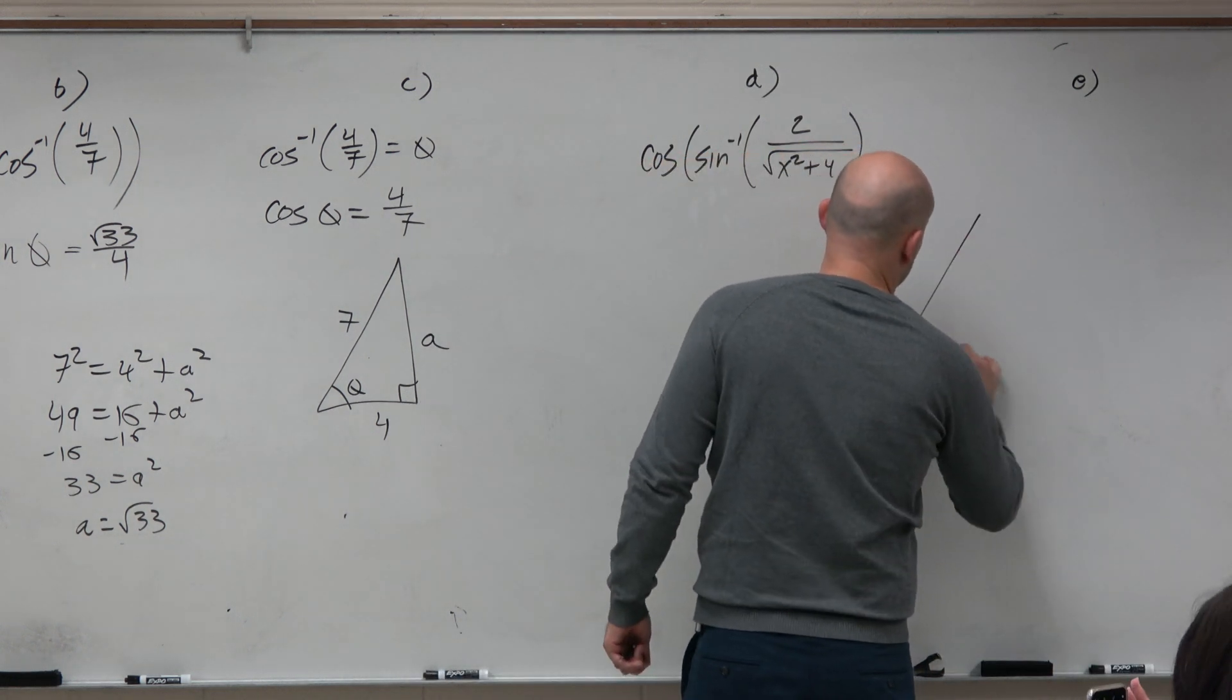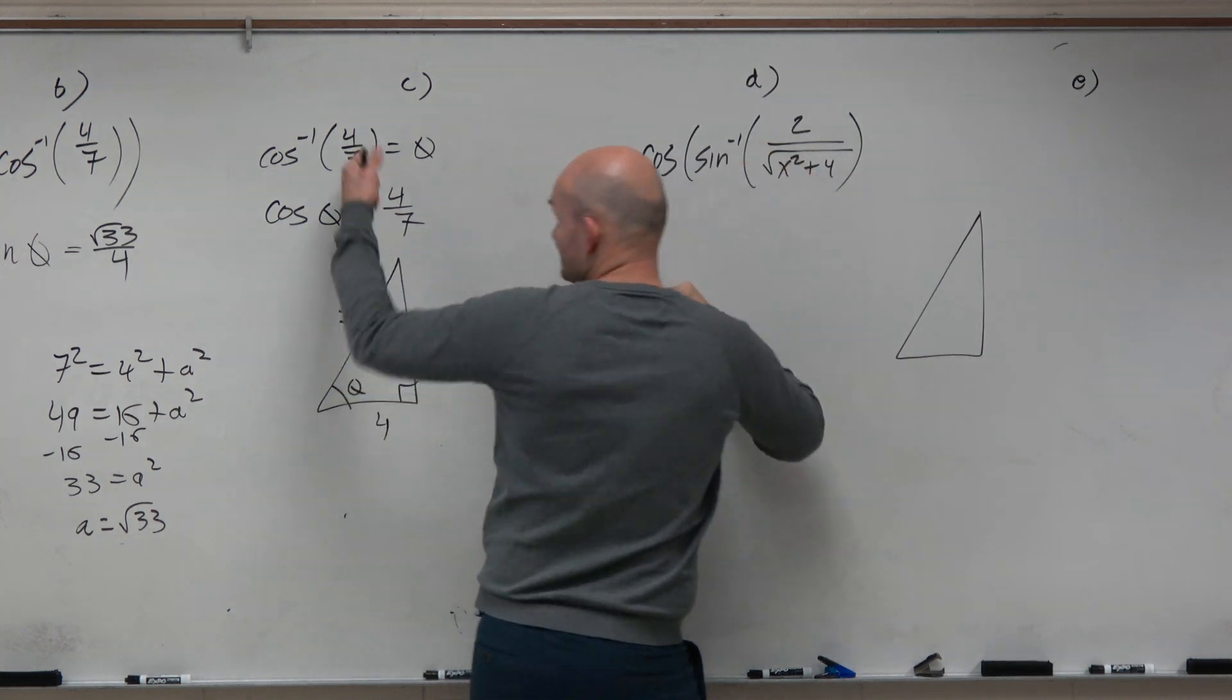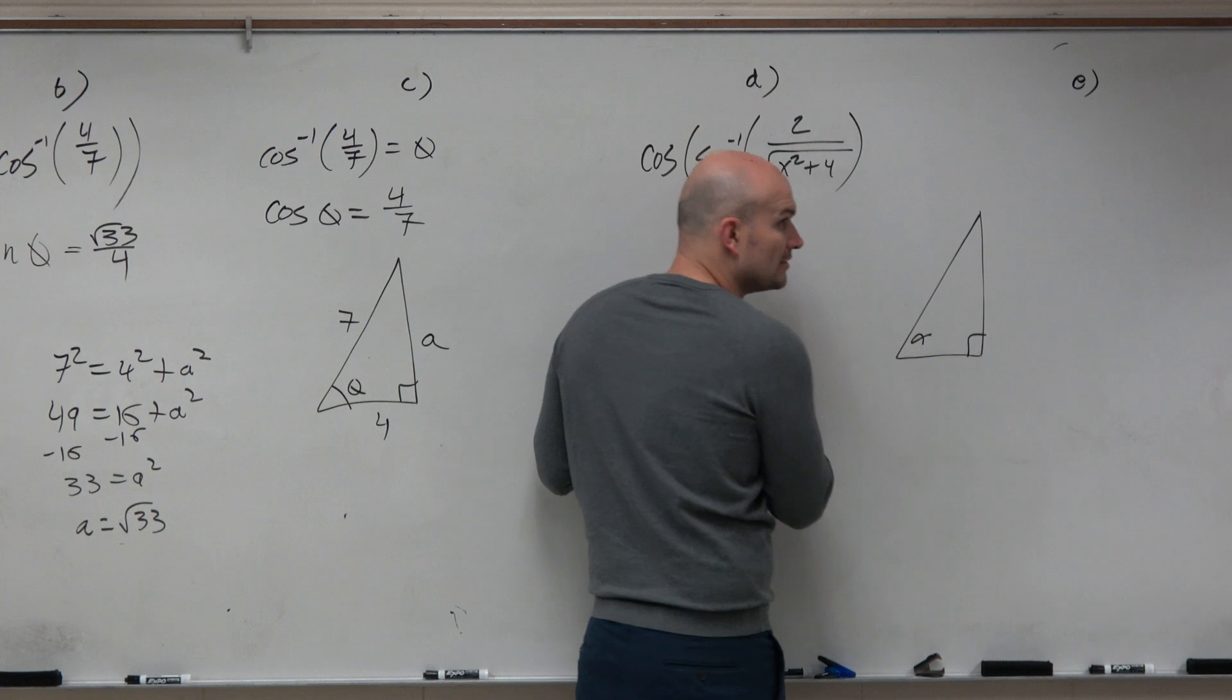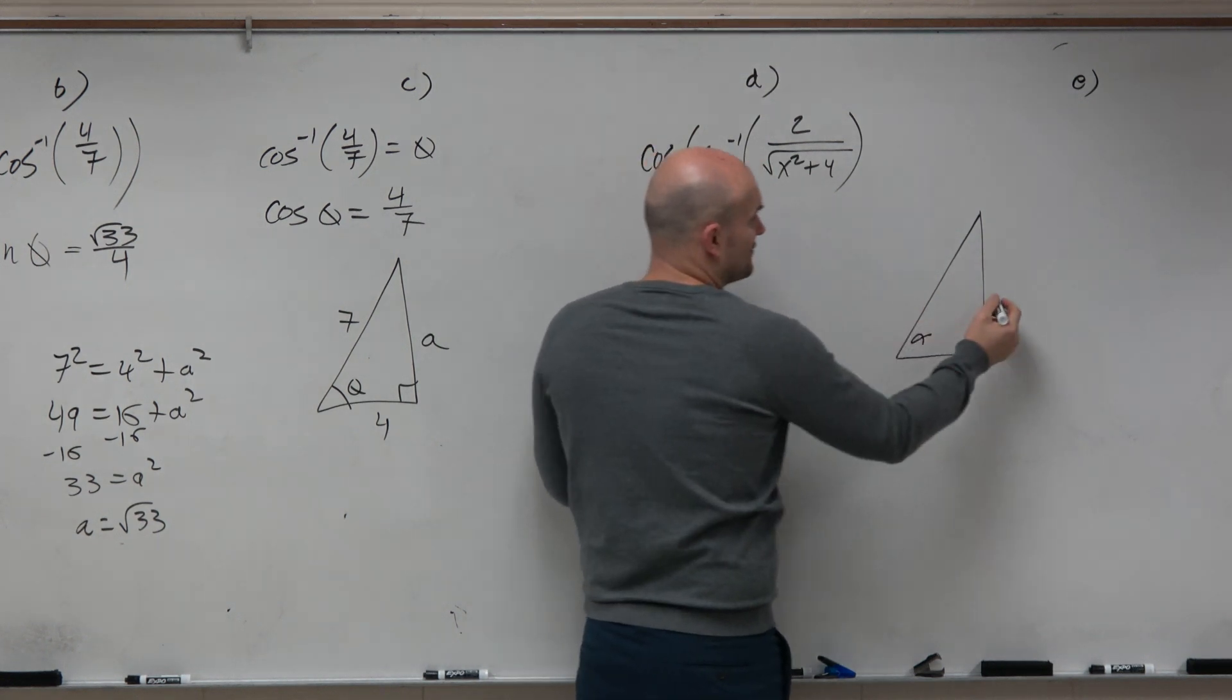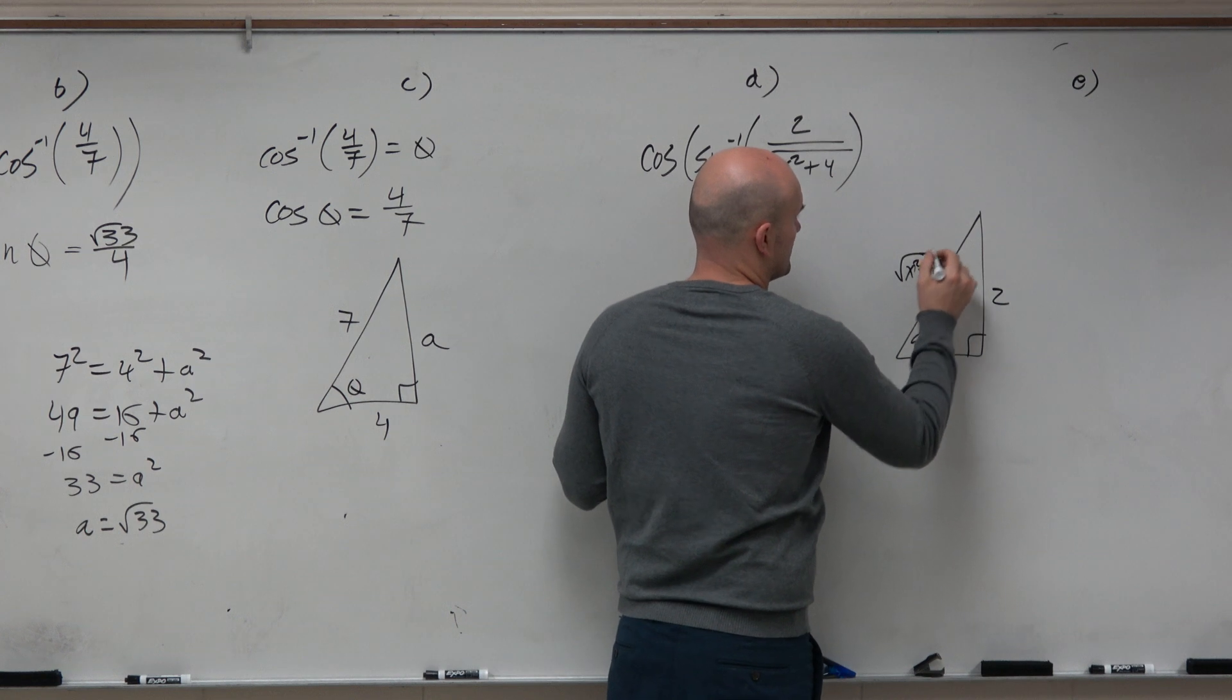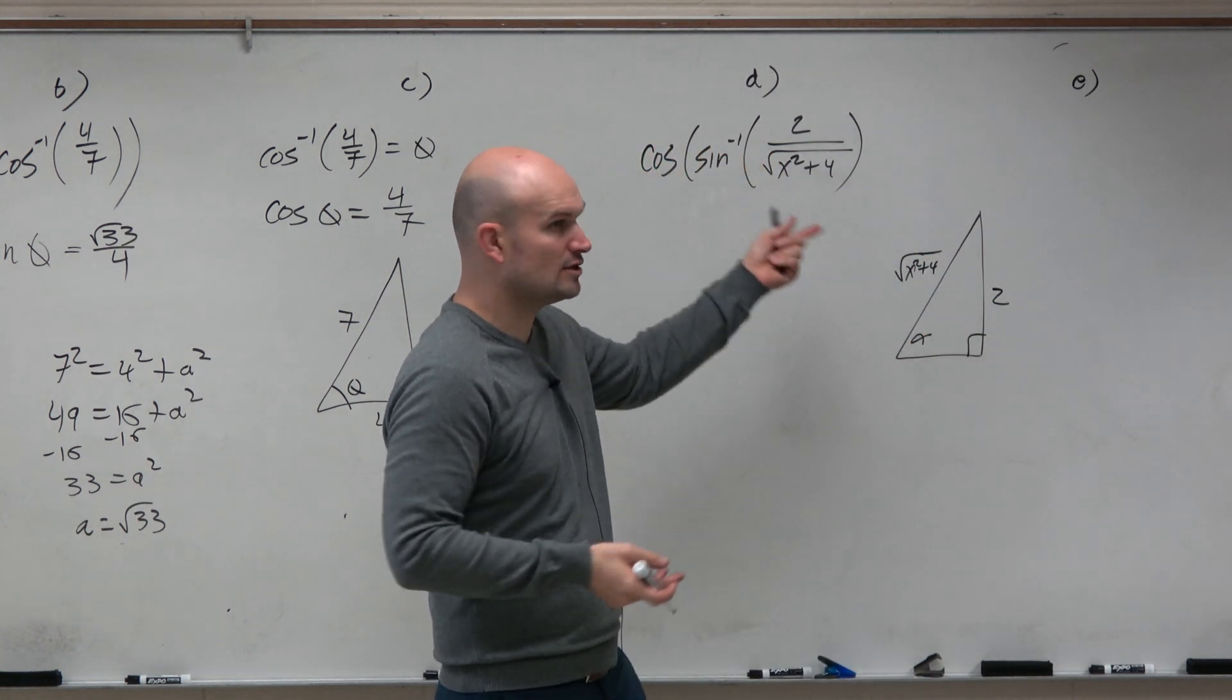So therefore, I actually don't need to write a statement like this if I don't have to. I'm going to draw the same triangle, though. But now we're doing sine, so therefore this is 2, and this is square root of x squared plus 4. So that's my triangle alpha opposite over hypotenuse.